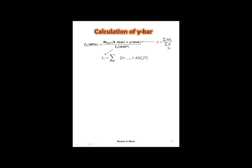If the cross-section of the structural member is a symmetrical cross-section, you just need to take the height and divide it by 2. However, if it's a non-symmetrical section, we have to use this formula right here.